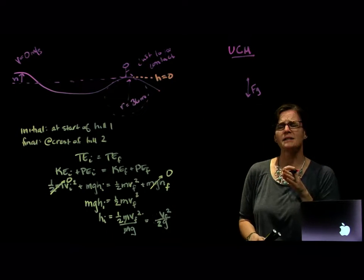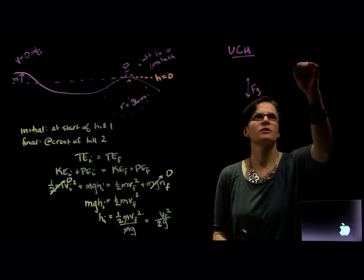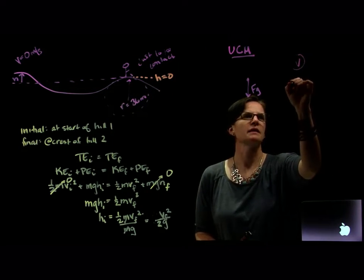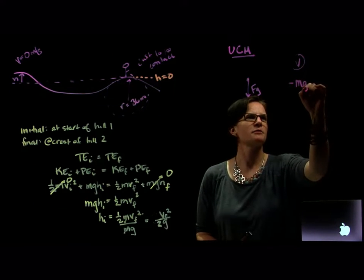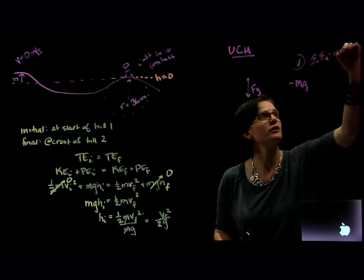So the only force acting on that object is the force of gravity. Well, that's in the vertical domain. We don't have anything horizontally. So we have minus mg, and because he's in circular motion, the sum of the vertical forces are equal to the mass times the speed squared over the radius.